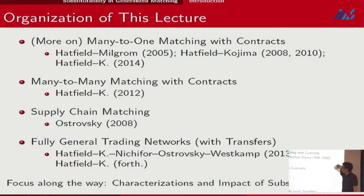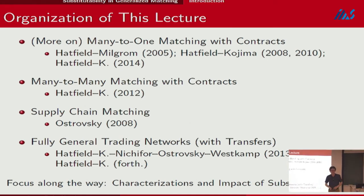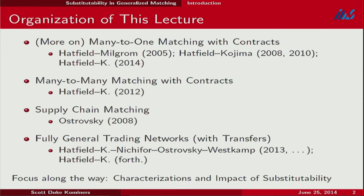We'll talk more about many-to-one matching with contracts. We'll pick up from Paul's lecture on Hatfield and Milgram and talk about some of John's results with Fuhito Kojima about weakened substitutes conditions — exactly what types of structure you need to make matching with contracts work. Then I'll bridge into many-to-many matching with contracts, where the structure is even a little cleaner. We can actually learn more about many-to-one matching models by thinking about many-to-many matching.